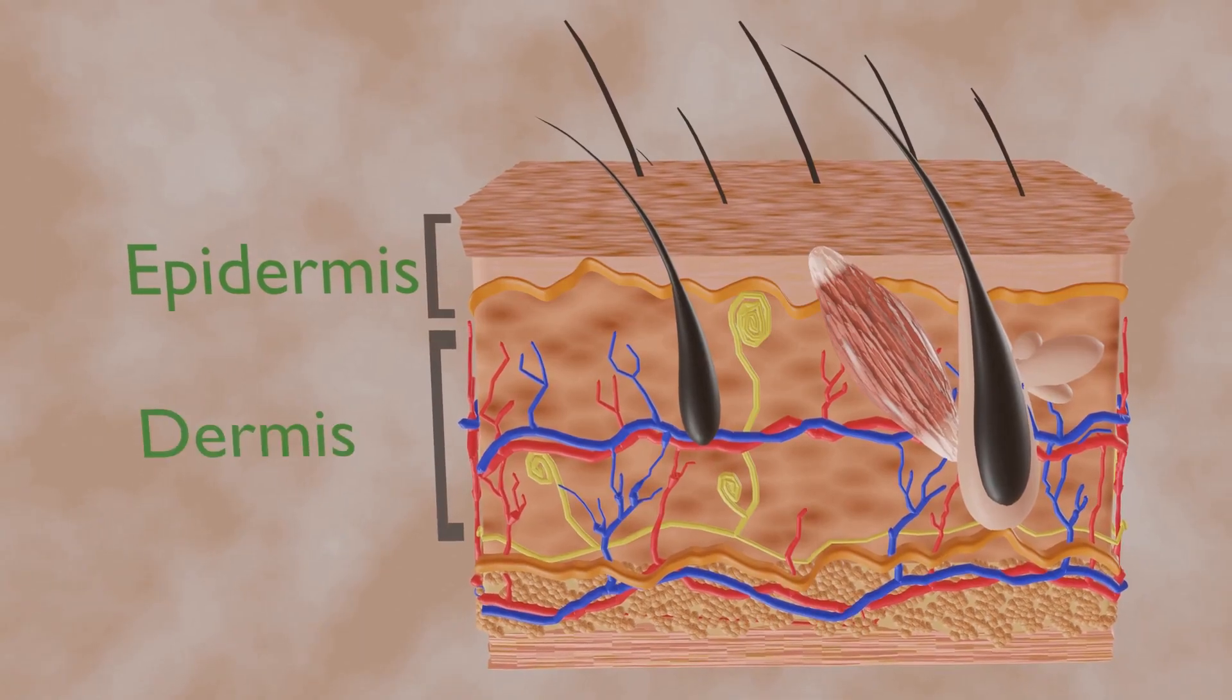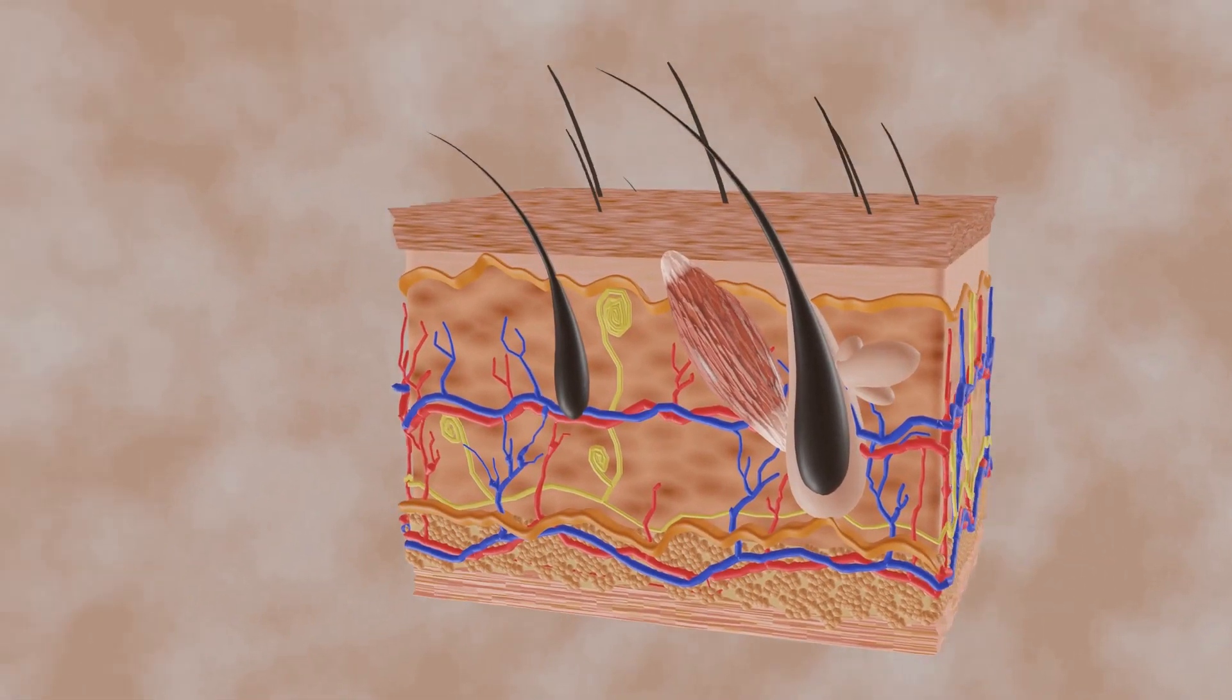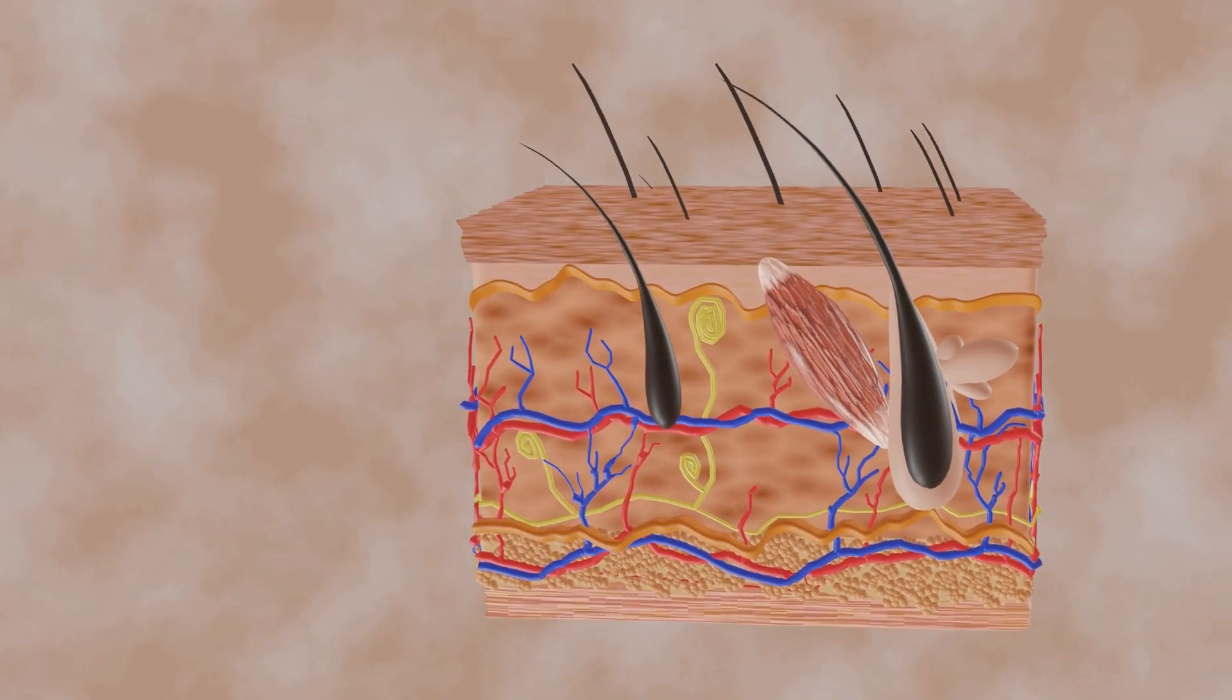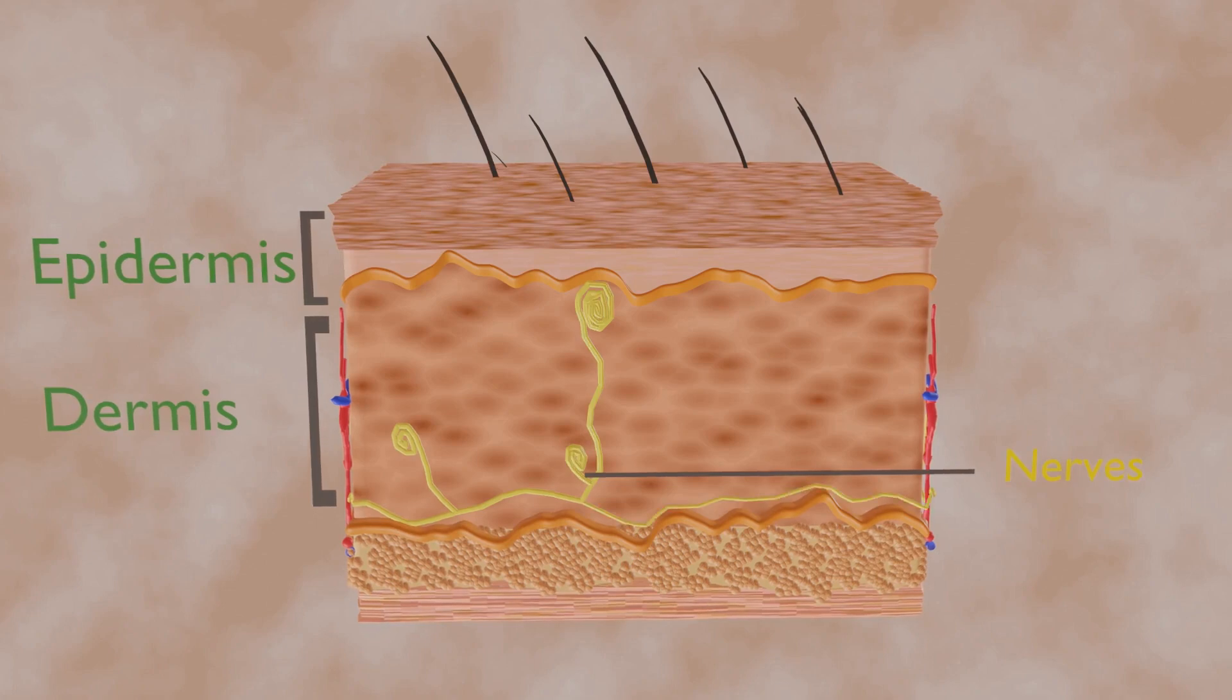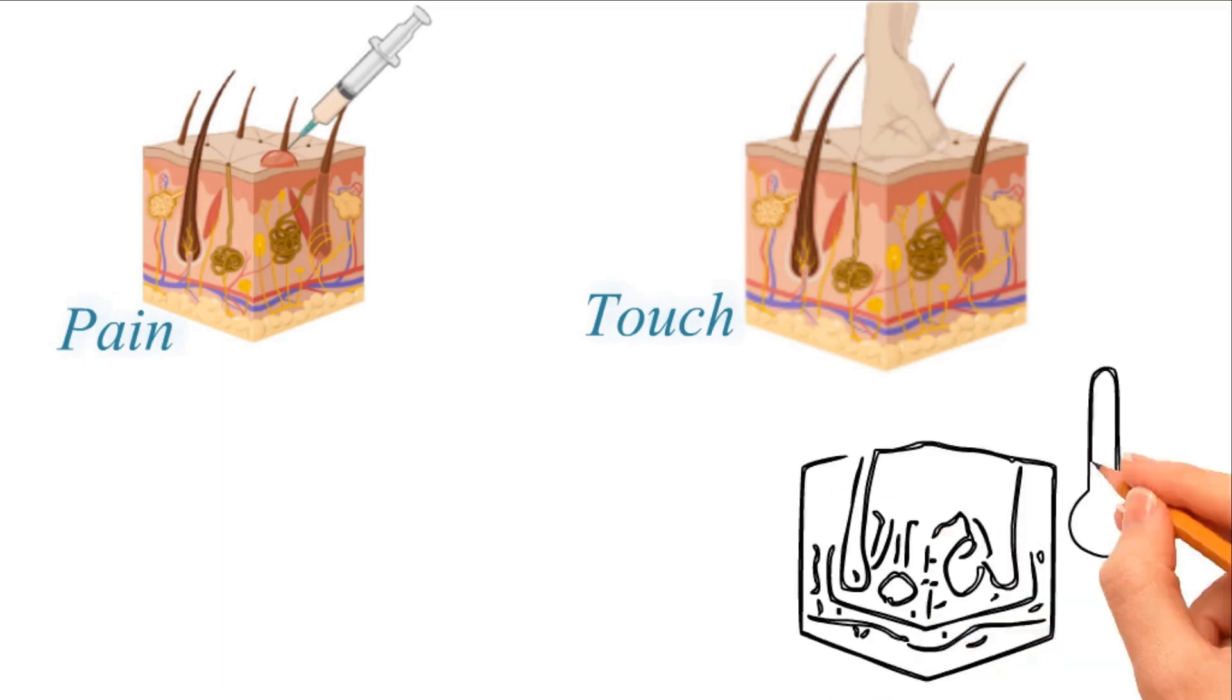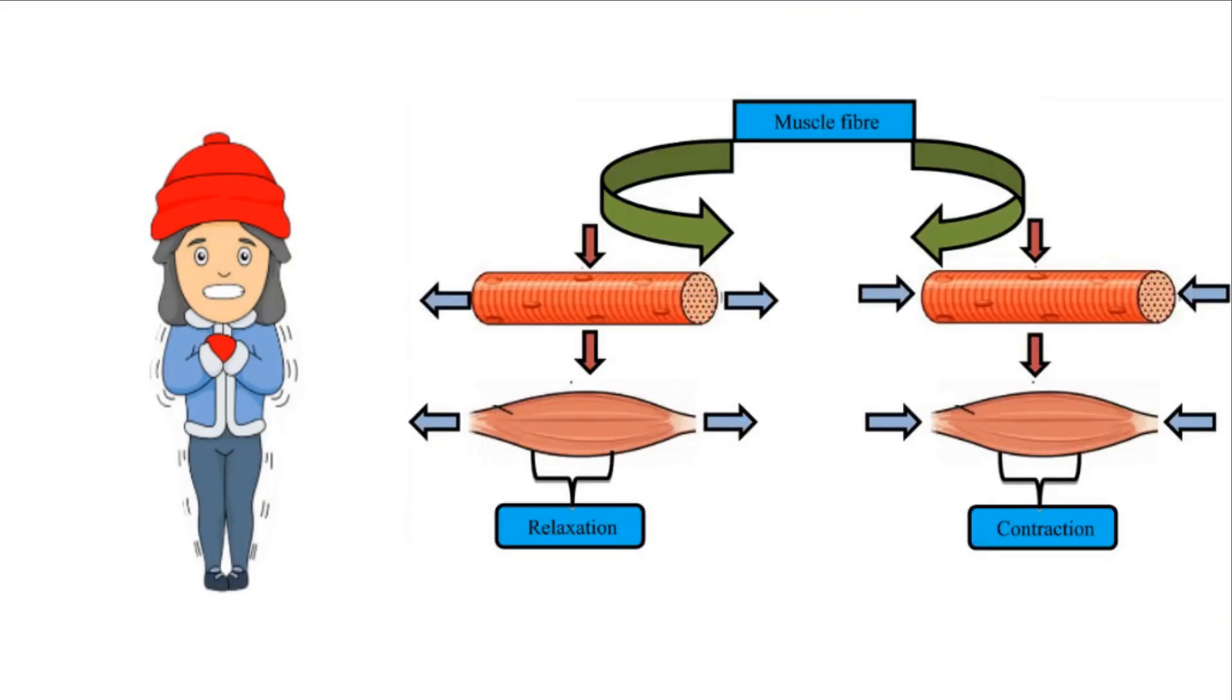The dermis is located beneath the epidermis and is the thickest of the three layers of the skin, 1.5-4 mm thick, making up approximately 90% of the thickness of the skin. This layer contains most of the skin's specialized cells and structures, including nerve endings. The dermis layer also contains pain and touch receptors that transmit sensations of pain, itch, pressure and information regarding temperature to the brain for interpretation. If necessary, shivering, involuntary contraction and relaxation of muscles, is triggered, generating body heat.